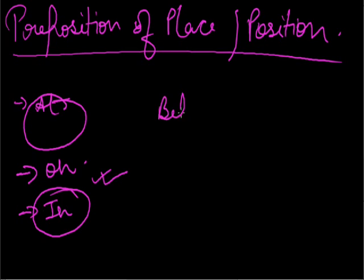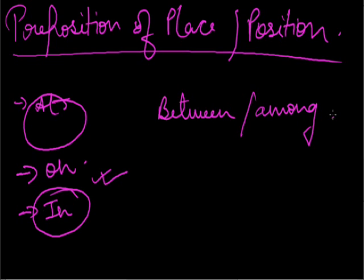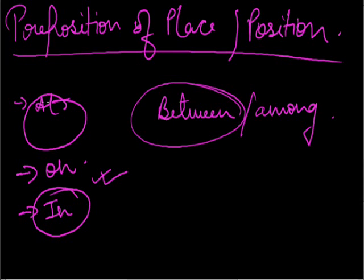The difference between 'between' and 'among.' 'Between' is normally used with two persons or things. For example: 'Anchika is standing between Rahul and Abhinav,' or 'There is a beautiful painting between the two windows.' When we think of more than two persons or things separately, we can also use 'between': 'There is a close bond of friendship between these three friends' — even though it is more than two, we use 'between' because we think of them individually.